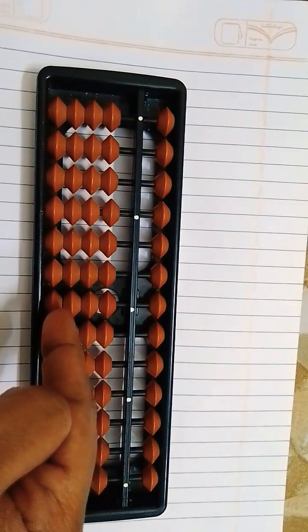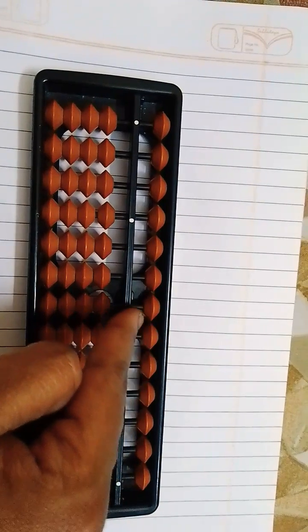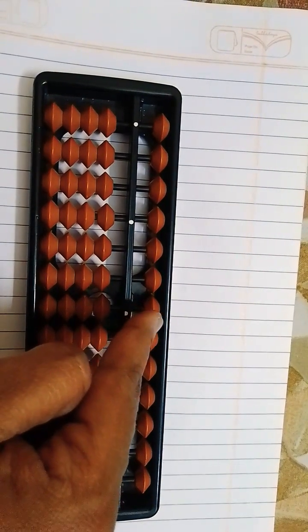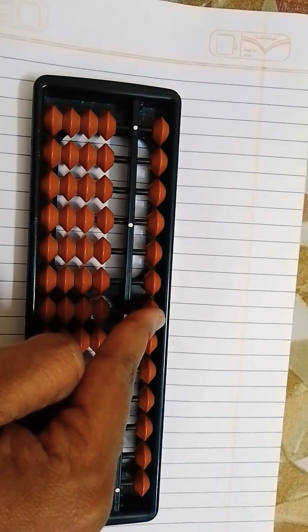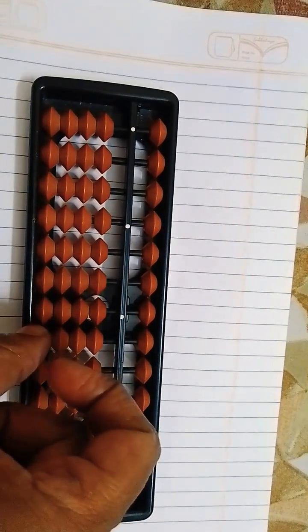So there are 4 total lower beads. Upper bead is 5. We have to add and subtract upper beads with the index finger, and subtract lower beads with the index finger.